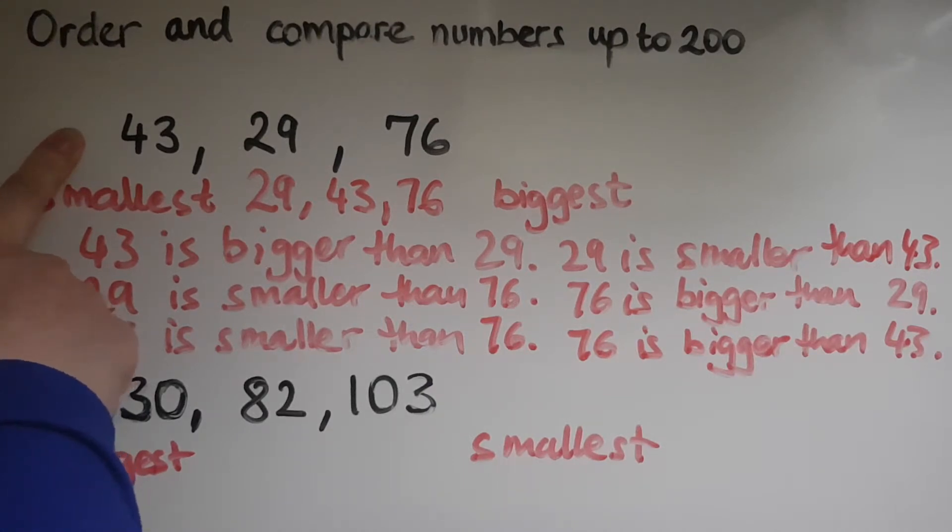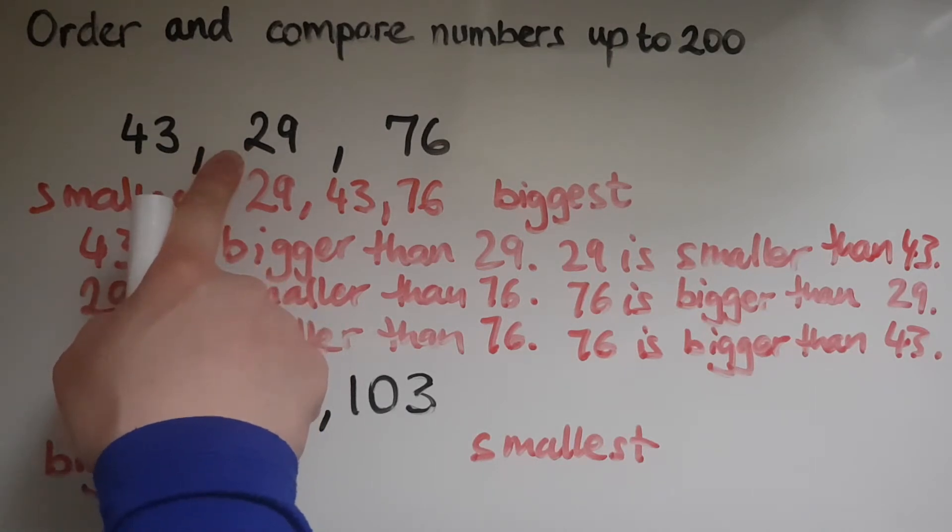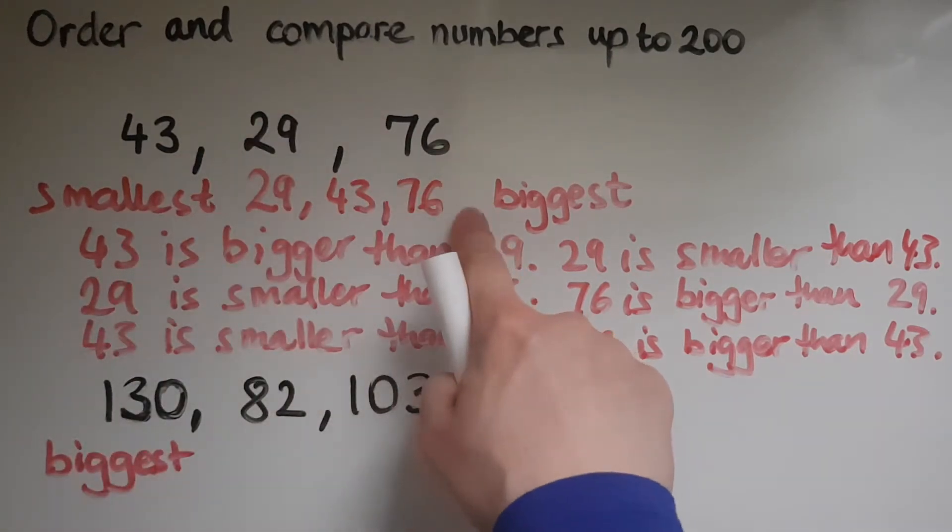So I looked at which amount, if this was money, which amount would I least want to get first. So 29 is the one that I would least want, because it's the lowest amount. And then finally you'd get to the one that you want most, 76, because it's the biggest.